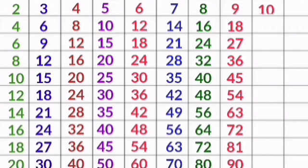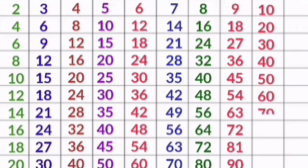10 1s are 10, 10 2s are 20, 10 3s are 30, 10 4s are 40, 10 5s are 50, 10 6s are 60, 10 7s are 70, 10 8s are 80, 10 9s are 90, 10 10s are 100.